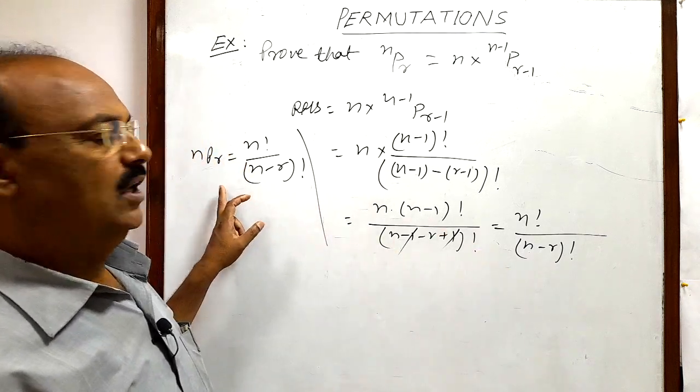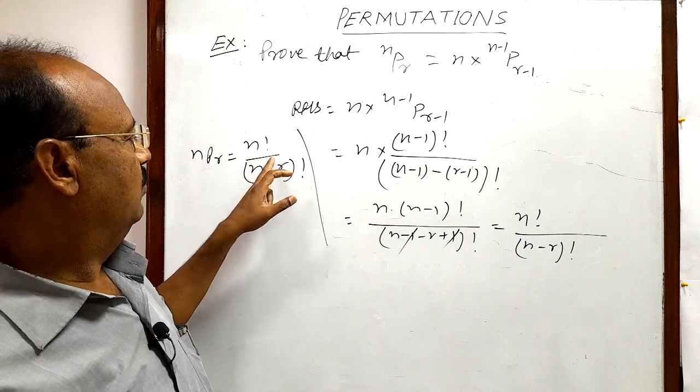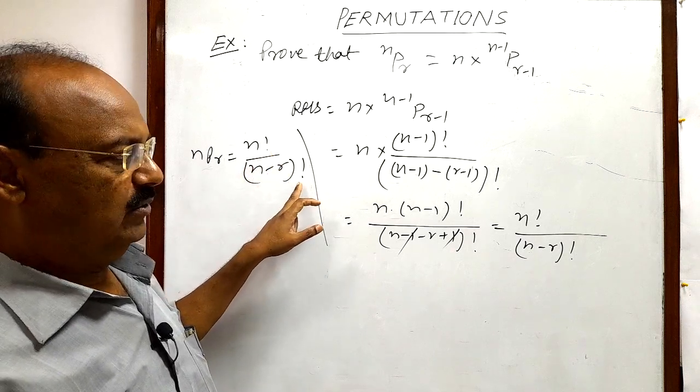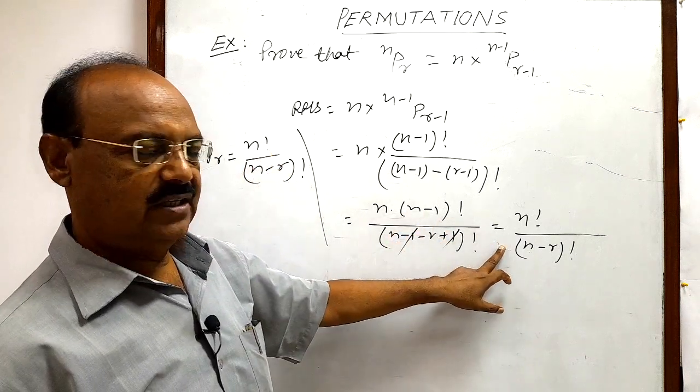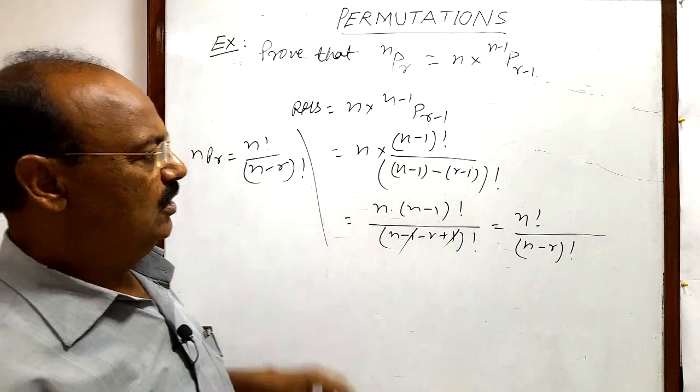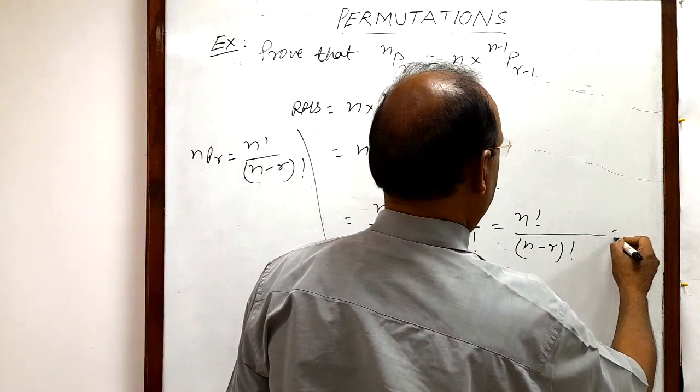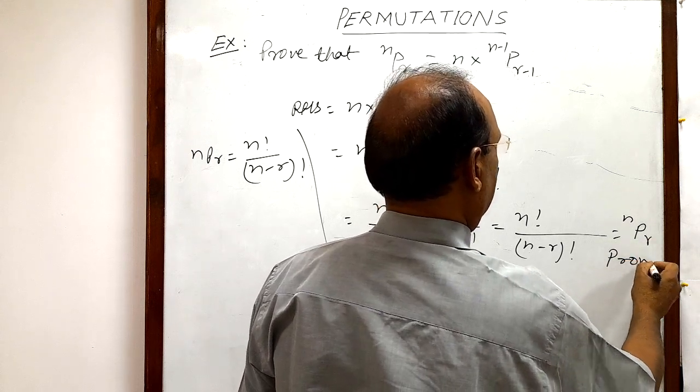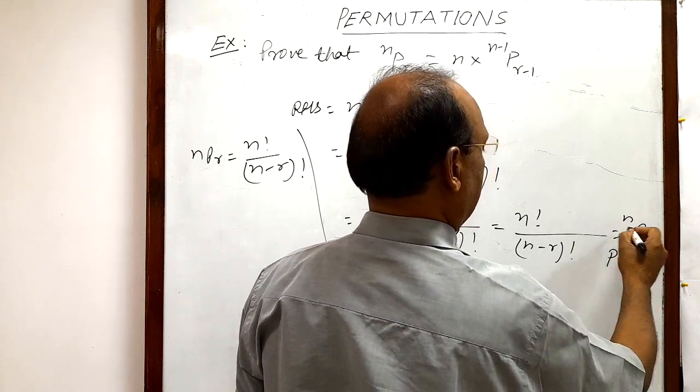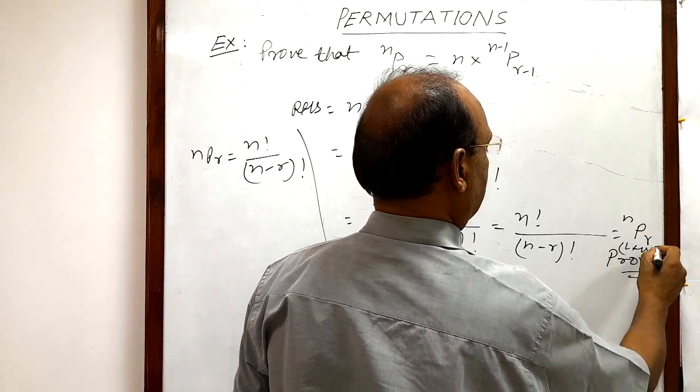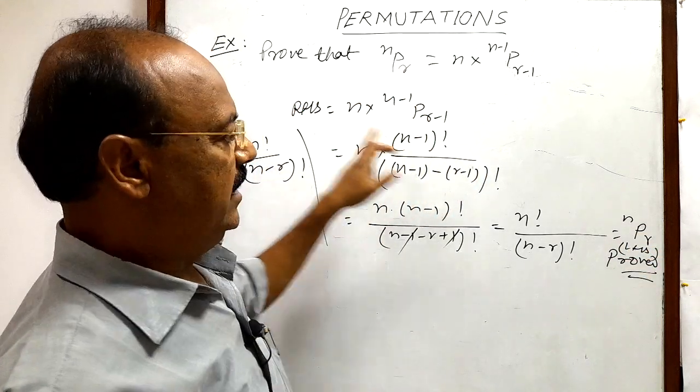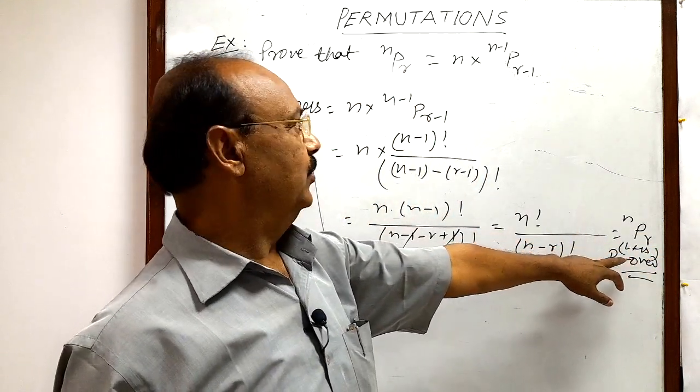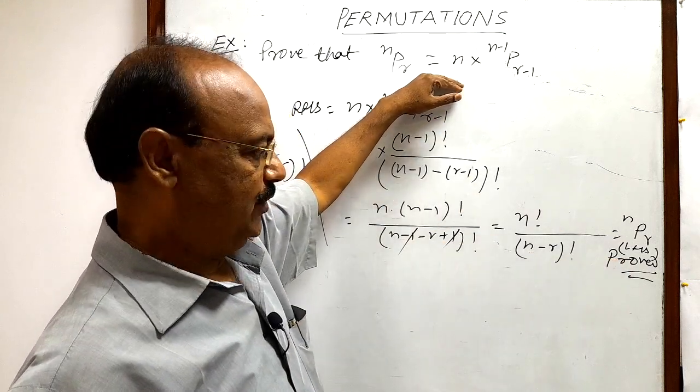Now you see this formula, formula is n factorial by n minus r whole factorial. The same expression is here, so with the help of this formula we can write this is equal to n p r. So it has been proved here, this is equal to left hand side. So we are getting here right hand side is equal to left hand side. So now we prove this expression.